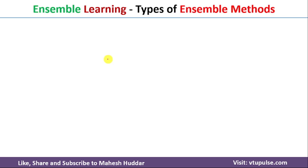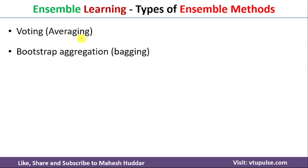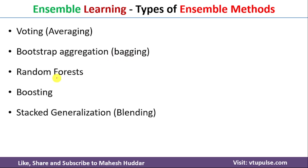Now we will see what are the different ensemble methods available in machine learning. The first one is voting or averaging. The second one is bootstrap aggregation or bagging. The third one is random forest. The fourth one is boosting, and the fifth one is stacked generalization or blending.